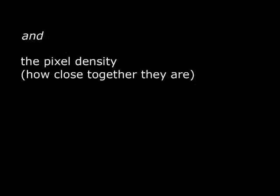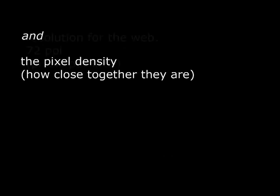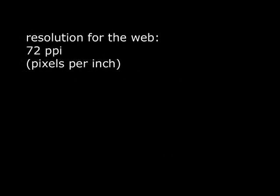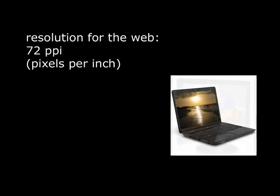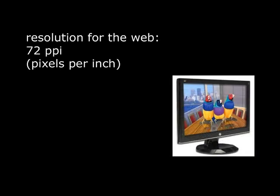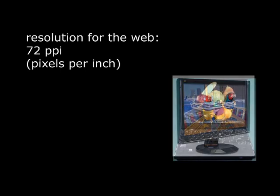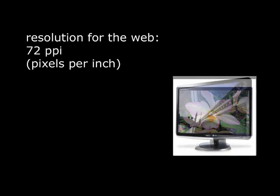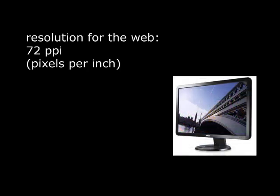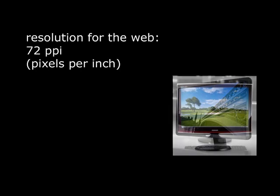The answer is that in addition to the number of pixels, the density of those pixels — or how closely packed together they are — is critically important. There are really only two levels of pixel density that we need to be concerned with. The first is 72 PPI, or pixels per inch. The overwhelming majority of computer monitors and displays are only capable of displaying 72 pixels per square inch of surface. This means that even if you had a 1 trillion megapixel image, it wouldn't look any better on screen, because the display is only able to show you 72 at a time.